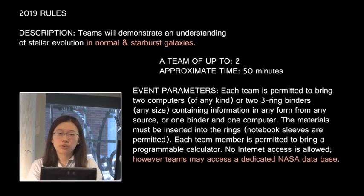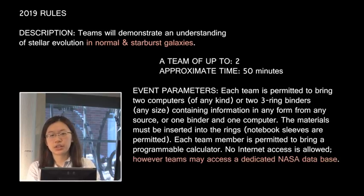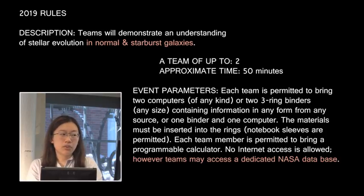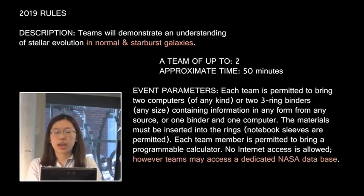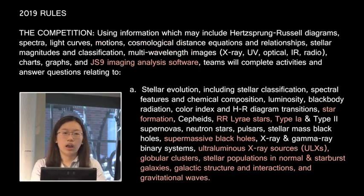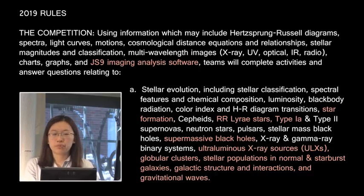The rules for this year are much the same as last year. The topic has changed to Stellar Evolution in Normal and Starburst Galaxies. The event parameters are pretty much the same as always: two computers, two binders, or one of each. The only change is that teams may be accessing a dedicated NASA database, and this has to do with JS9, which will potentially be a component of the event this year.